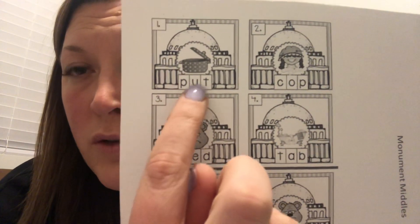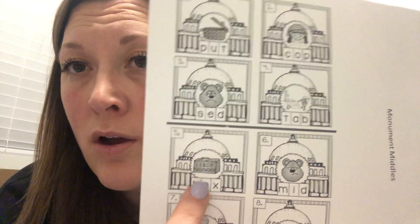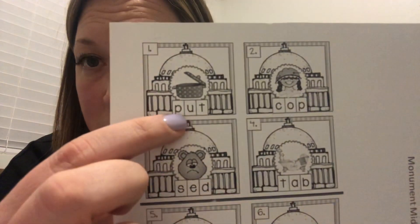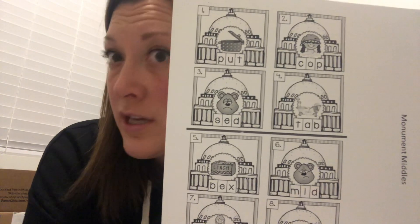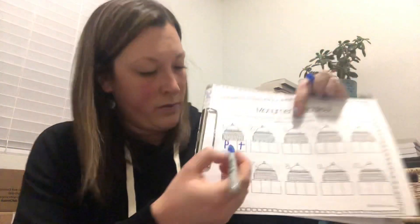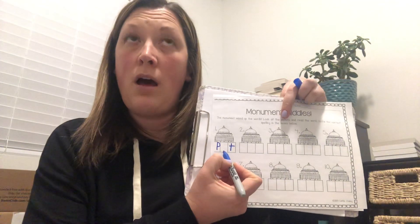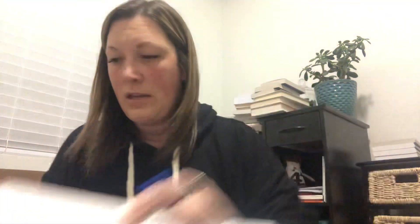This will be Thursday. This one is called Monumental Middles. There's a sheet of words, and all of the middle letters are wrong. For example, it says P-U-T but it's supposed to say pot. So you're going to keep the first and last letter the same and change the middle one. Instead of put, it should say pot — the middle sound is O.